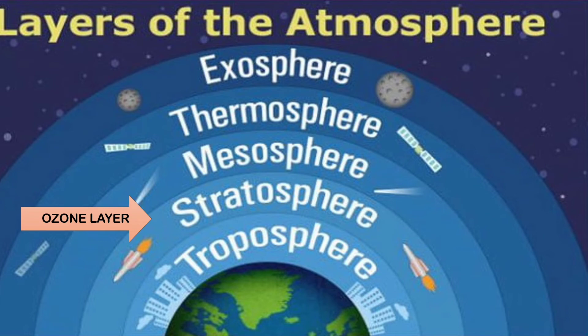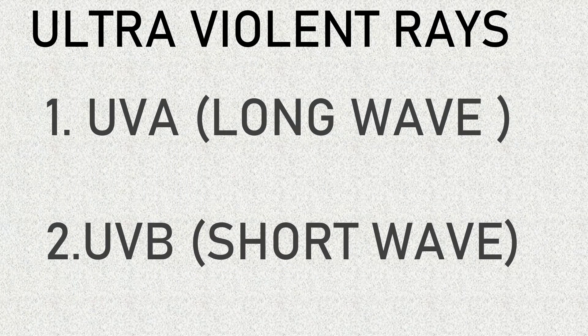What does the ozone layer do? Ultraviolet rays from sunlight are of two types, namely UVA and UVB. UVA is a long wave and UVB is a short wave. Of those two, ultraviolet B rays cause harmful effects like skin cancer and harm some crops and marine life. The ozone layer absorbs UVB rays and prevents many of these harmful effects.